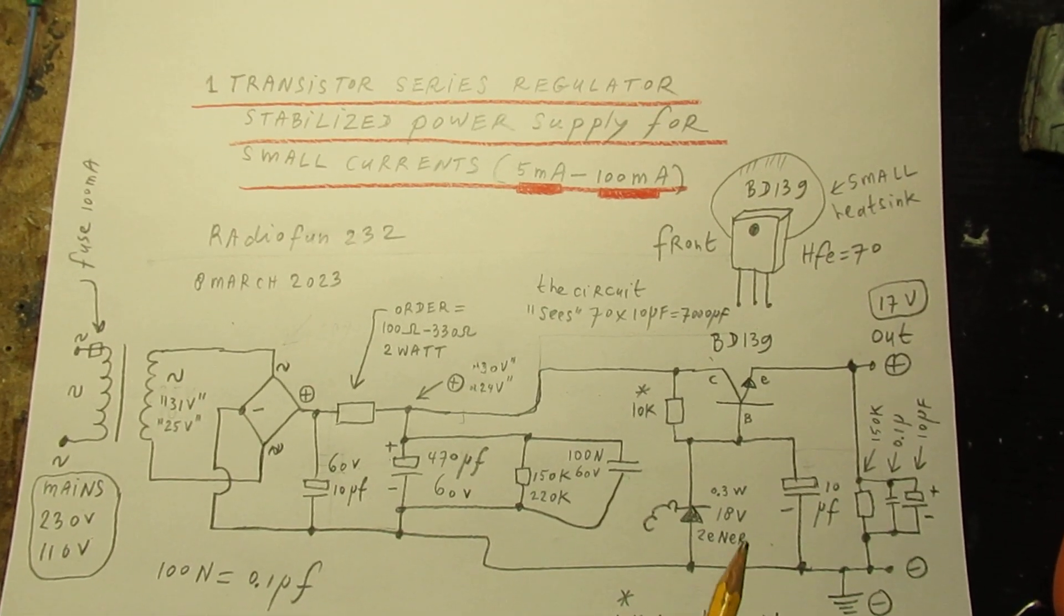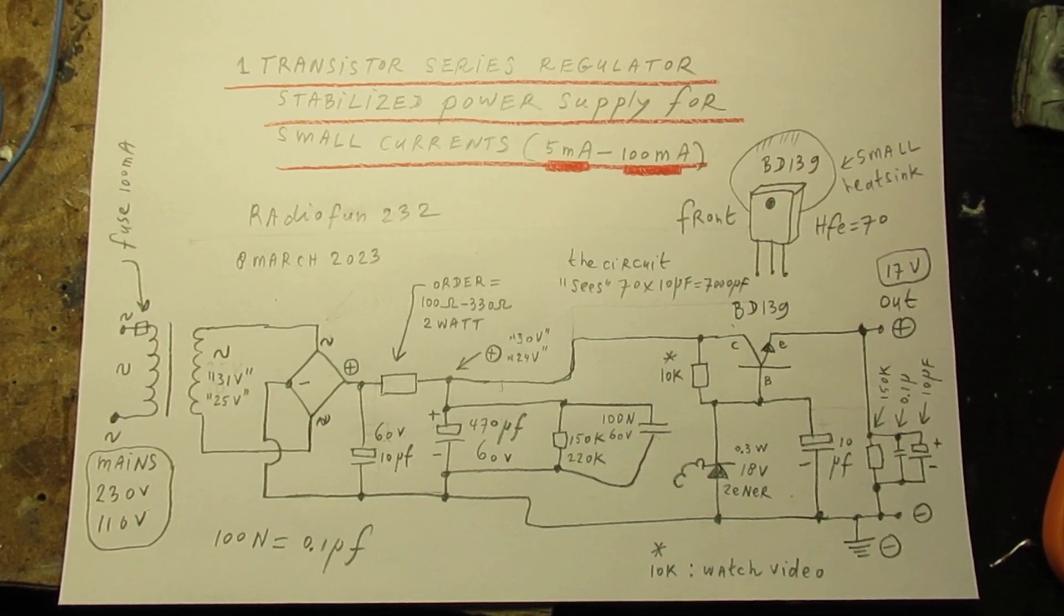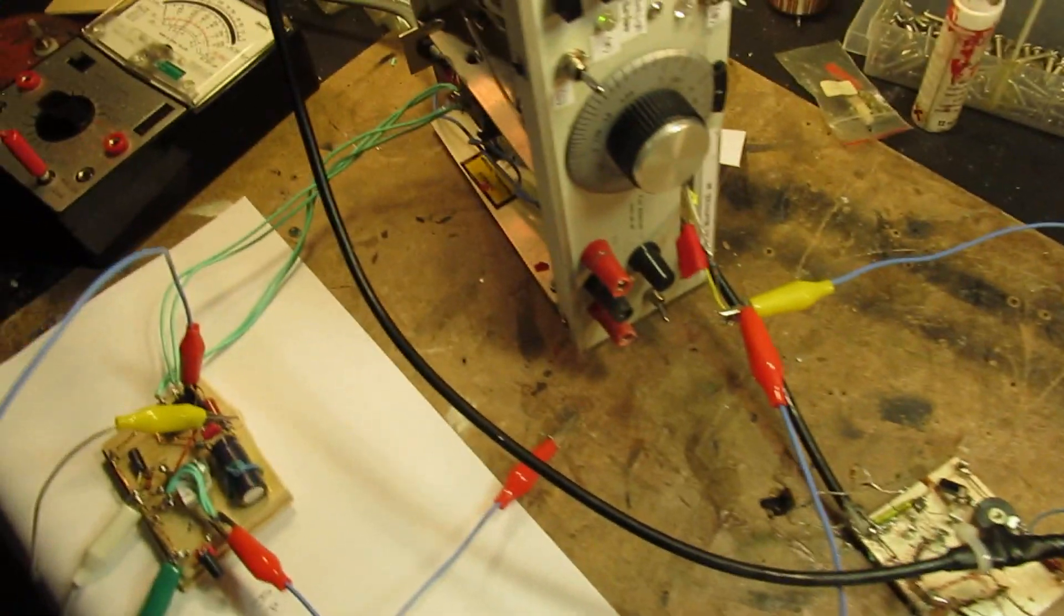For higher currents, this has to be a Darlington, etc. Much more is there on my YouTube channel and you can search there via the looking glass, Radio Fun 232 on YouTube.